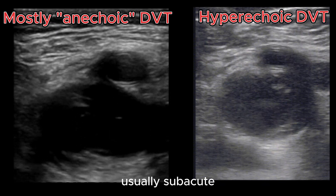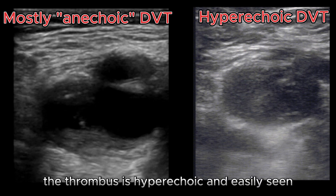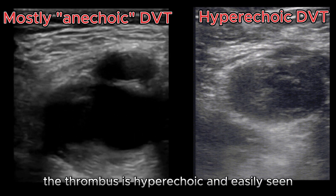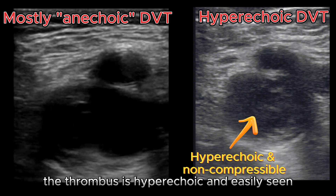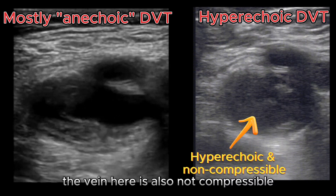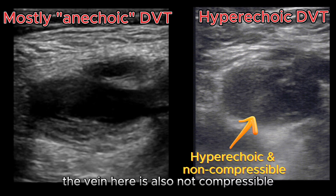This is why it's important to compress the vein throughout the examination. In other cases, usually subacute, the thrombus is hyperechoic and easily seen. The vein here is also not compressible.